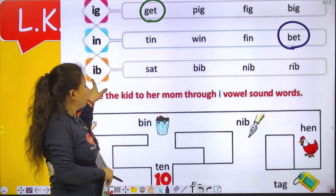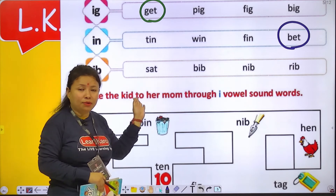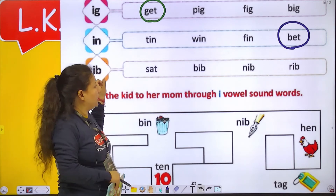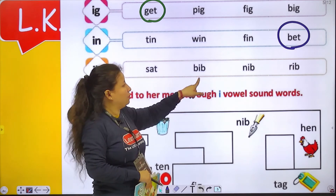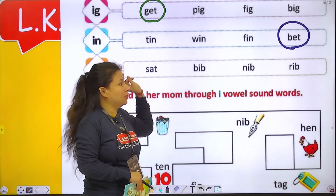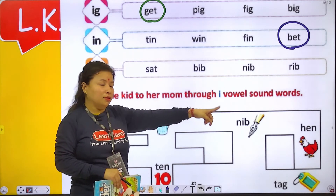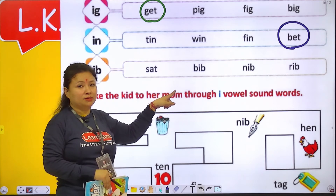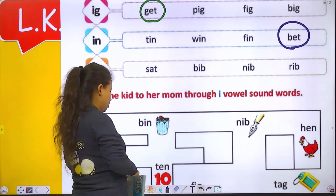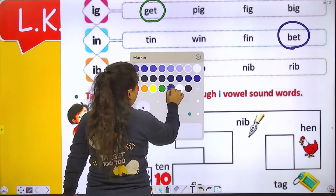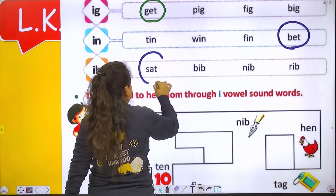Then ib. Sat. Ib and sat — no. Ib, bib, nib, rib — these match with ib sound. But sat — this is wrong, it doesn't match. To ma'am ne bhi isko circle karna hai.